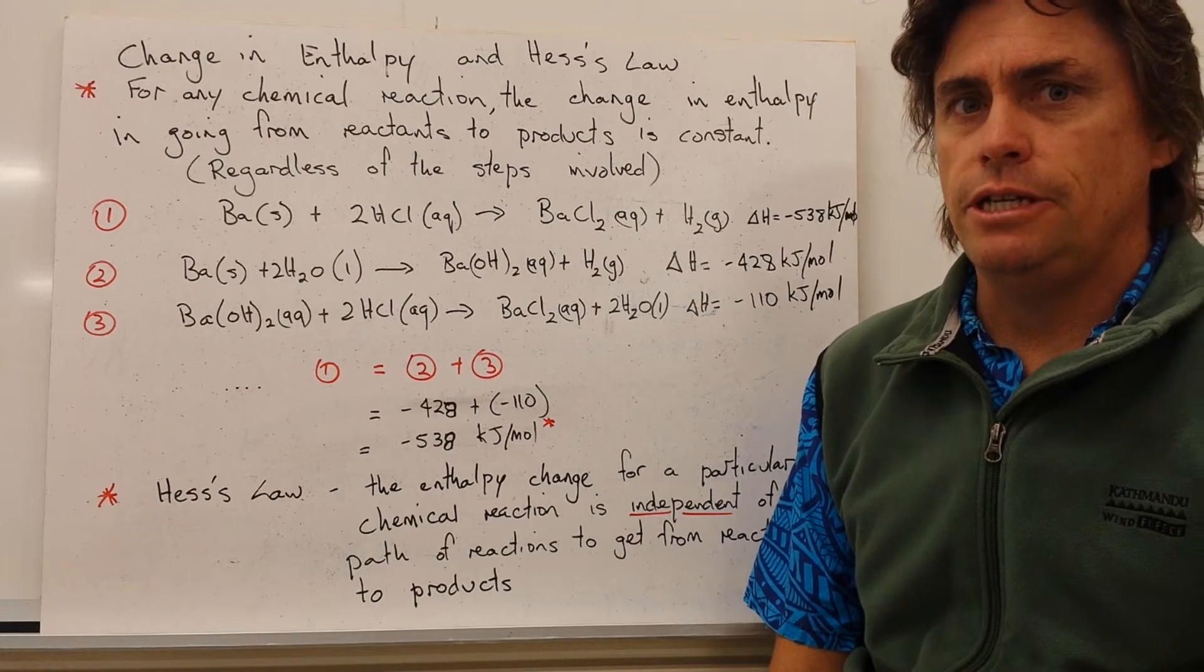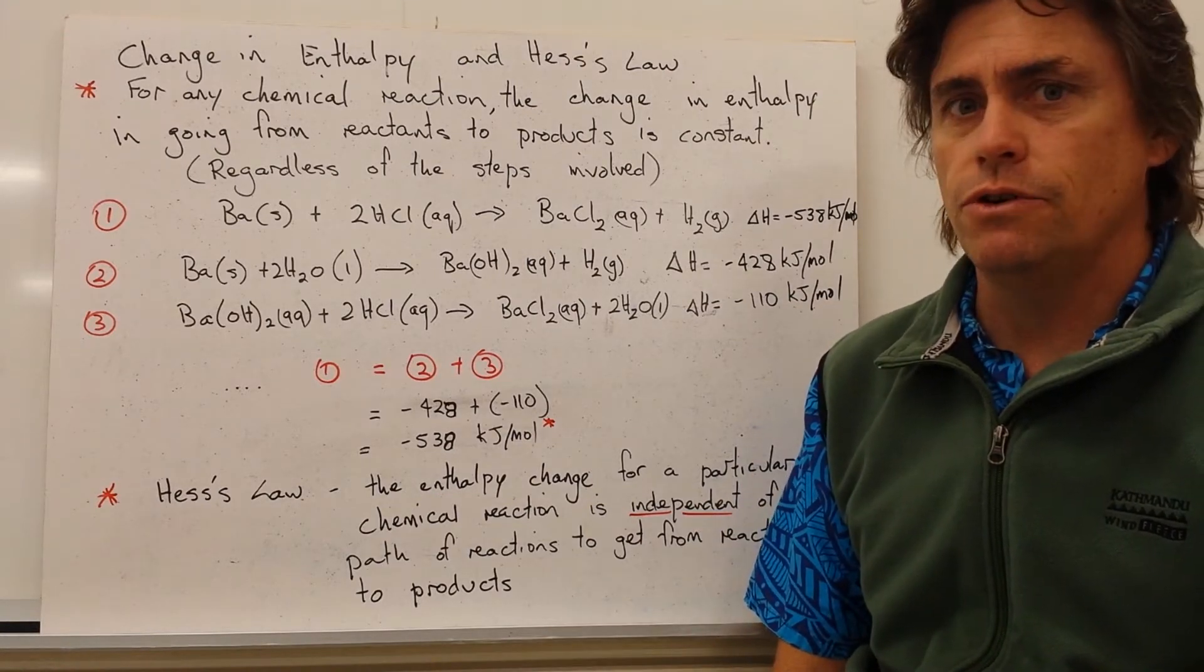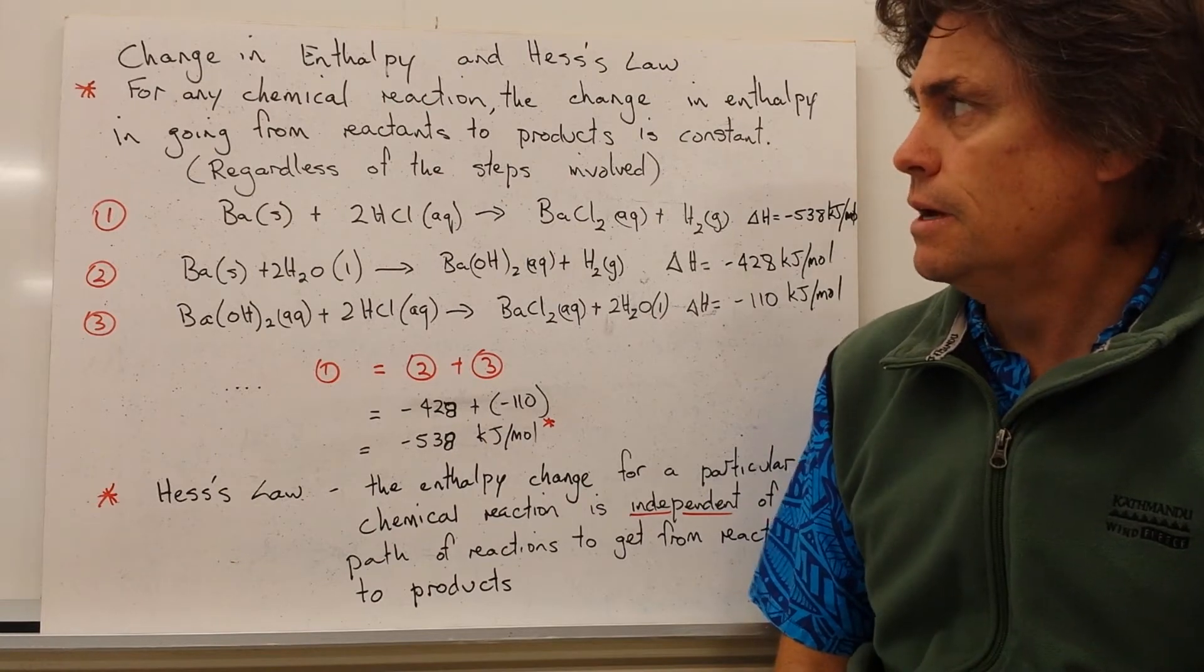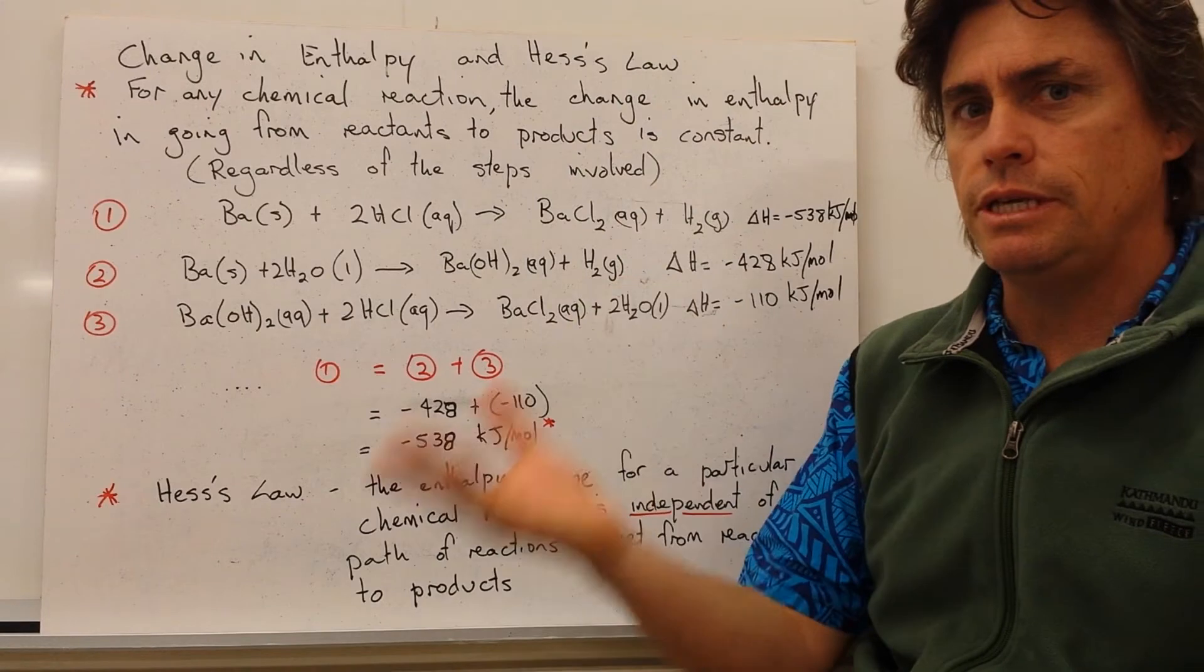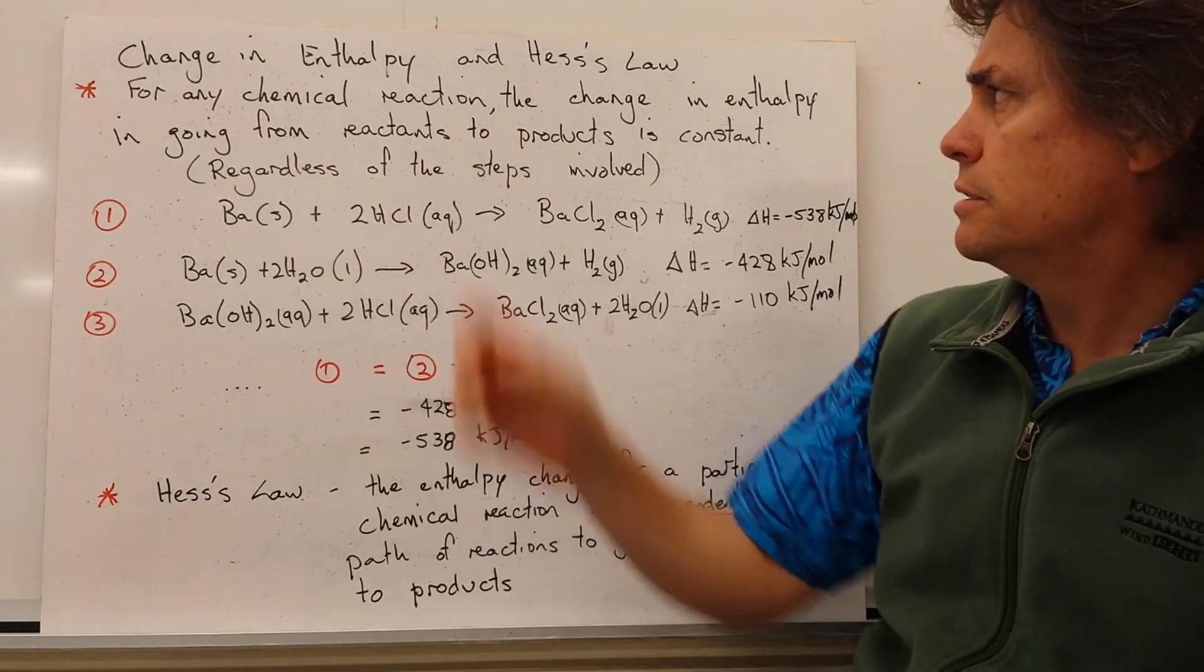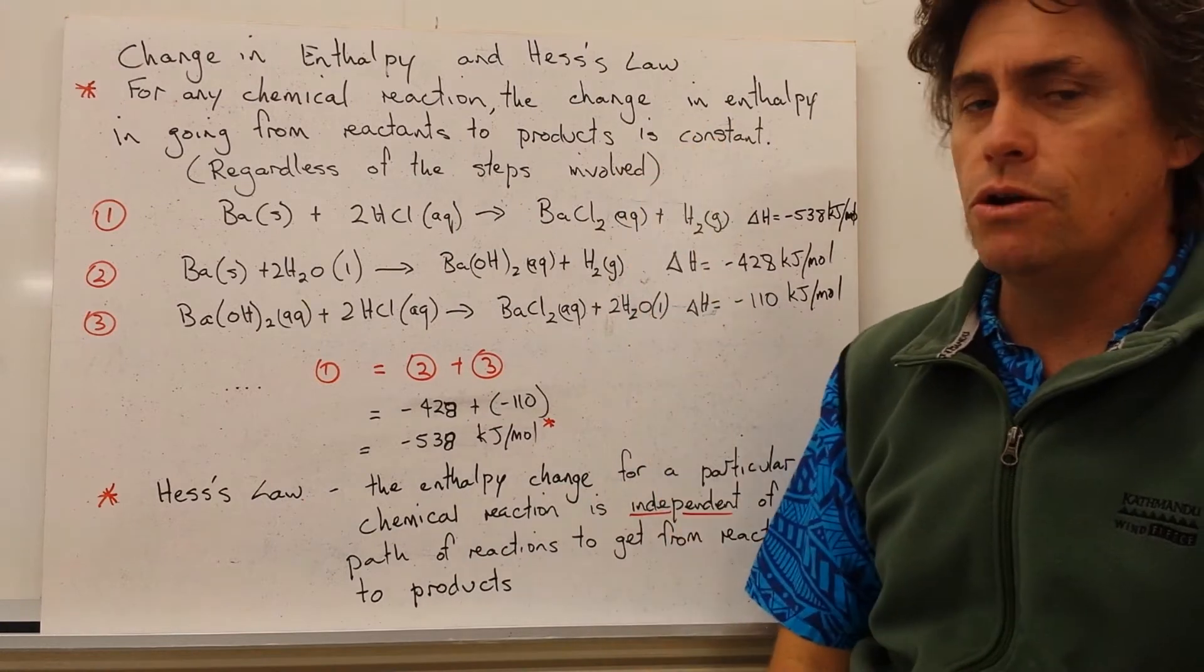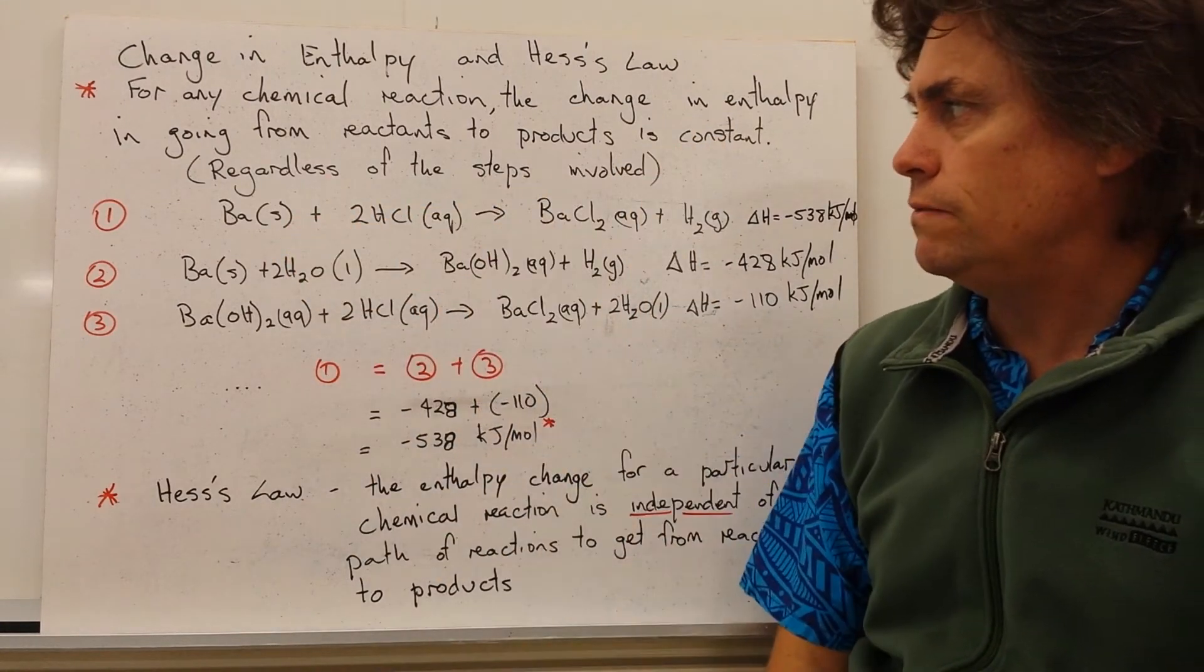So the law of conservation of energy tells us that we can't create or destroy energy, we can only transfer it or transform it. So for any chemical reaction, the change in enthalpy, whether it's giving the heat out or taking it in, in going from reactants to products, will always be constant. And this is regardless of the steps that are involved.